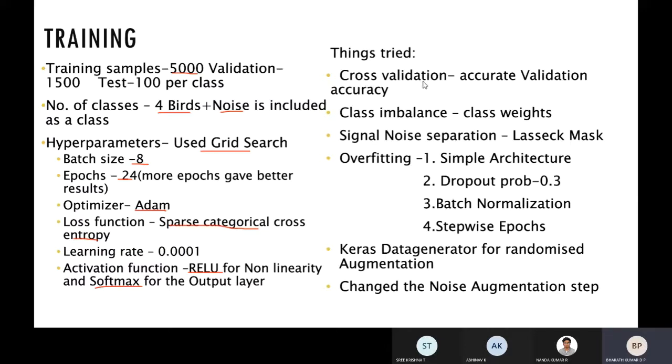Things we tried: cross validation to get more accurate validation accuracy, solved class imbalance manually by choosing samples in equal numbers. For signal noise separation, we tried Laplacian mask but Sprengel mask gave better results. To solve overfitting, we reverted to a simple architecture, used dropout probability of 0.3, batch normalization after each convolutional layer, and increased epochs stepwise to monitor accuracy changes and enable early stopping at the right accuracy.